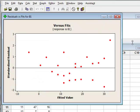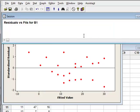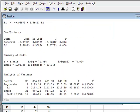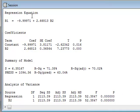The numerical results will be given in the session window which we will look at first. We see that we have a linear regression equation given by B1 is equal to effectively minus 10 plus 2.668 times B2.